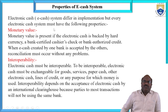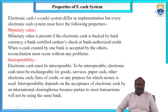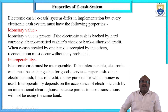The first important thing is called Monetary Values. What about Monetary Values? The Monetary Values is present if the electronic cash is backed by actual currency — a bank certified cashier's check or bank authorized credit. When an e-cash credited by one bank is accepted by others, reconciliations must occur without any problem. Such type of thing is called Monetary Values. The Monetary Values is the most important property of the e-cash system, and online marketing business should follow Monetary Values.